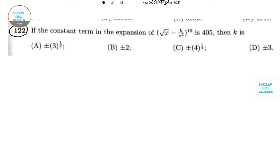Keeping in mind that you know the basic binomial structure, so root X minus K by X squared to the power 10. The general term is 10CR times X to the power (R/2) times K to the power (10-R).